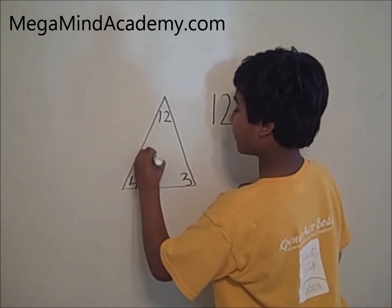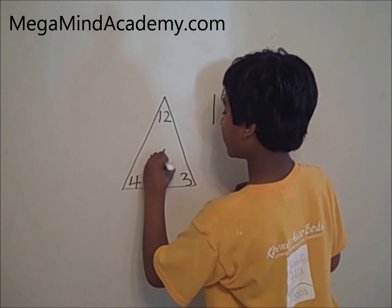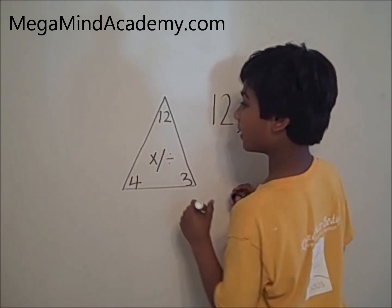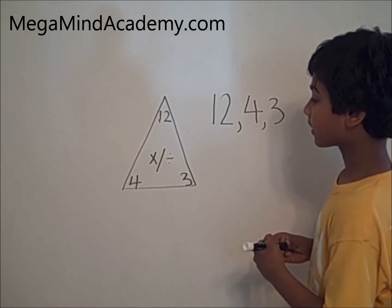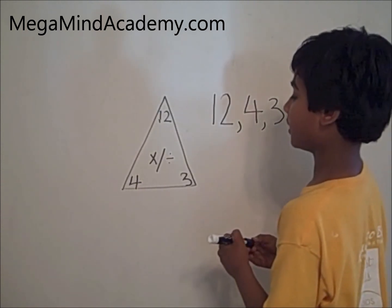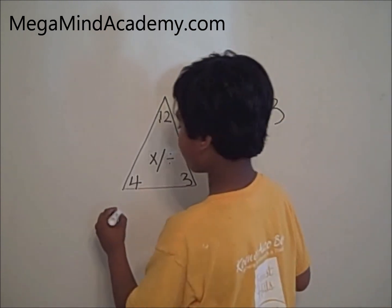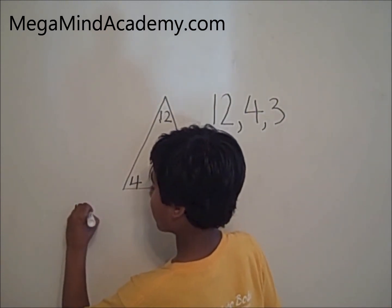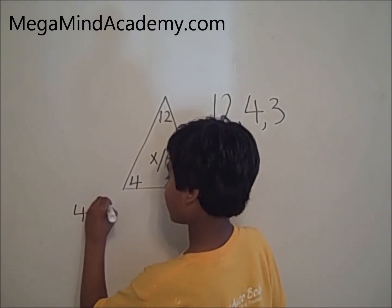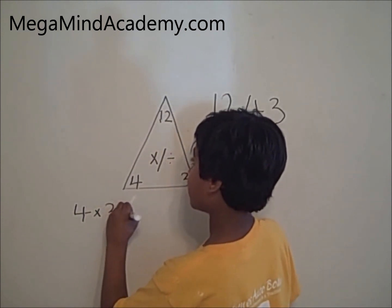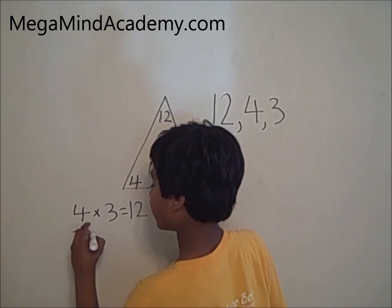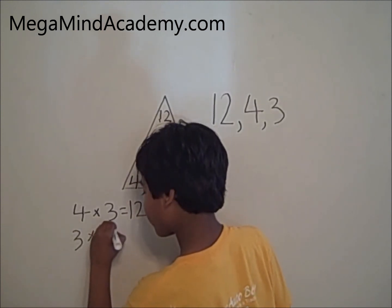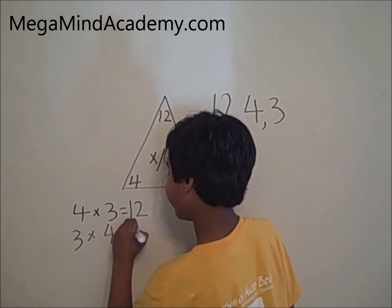And we have to put the multiplication and division sign because we're doing multiplication and division relation among the numbers. Now let's do multiplication relation among the numbers. 4 times 3 is 12. 3 times 4 is 12.